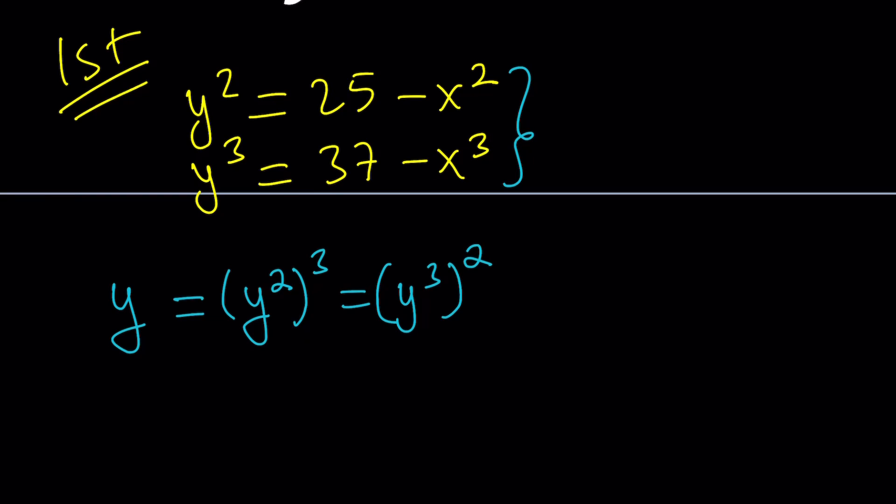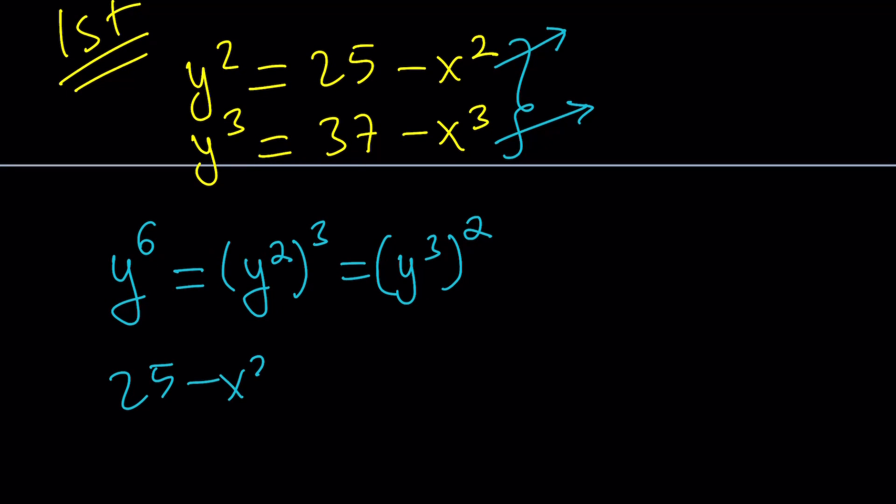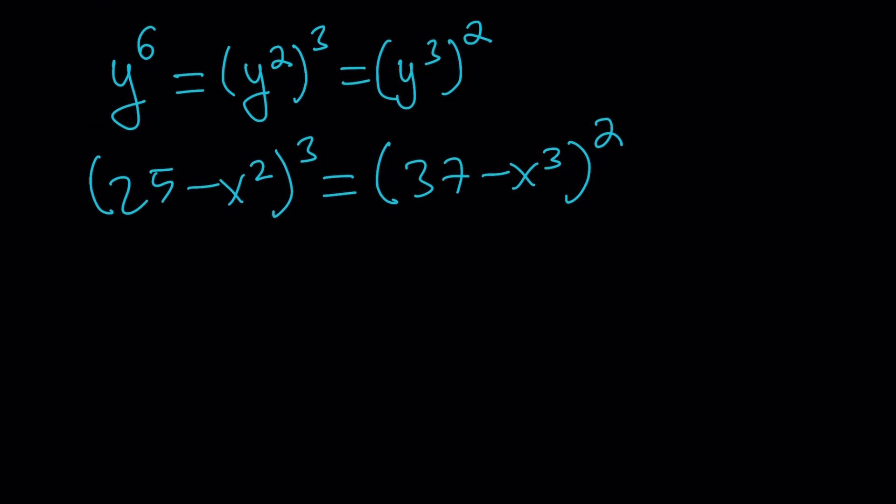We don't need to take roots because we have y squared and y cubed. What can we do with that? Think about the least common multiple of 2 and 3. Isn't that 6? So we're going to get y to the power 6. We can take y squared and cube it, or we can take y cubed and square it. Both of them will give us y to the 6th power. So this kind of helps us avoid roots. Because imagine if you use radicals, that will be radical as well as complicated.